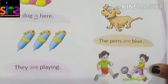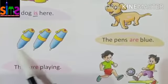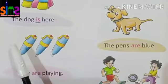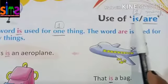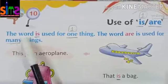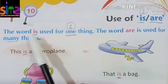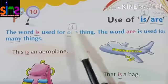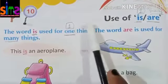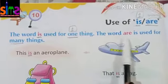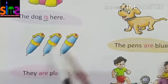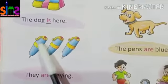Now kids, let's see some more examples. What are these? These are pants. One, two, three — they are more than one. The word 'is' is used for one thing, and the word 'are' is used for many things. So we use 'are' here.